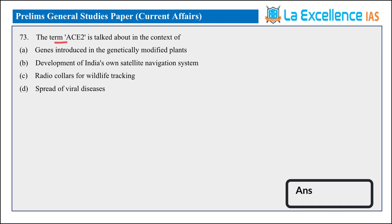Next is ACE2. ACE2 is an enzyme or protein that is useful for the virus to enter into the cells. In this context, ACE2 is related to the spread of viral diseases. This was in the news because of COVID-19. So answer is D.